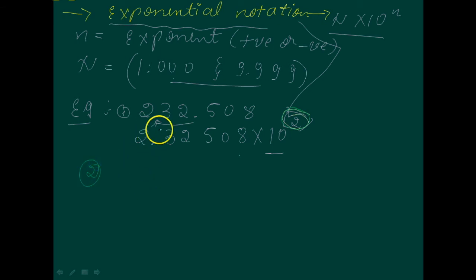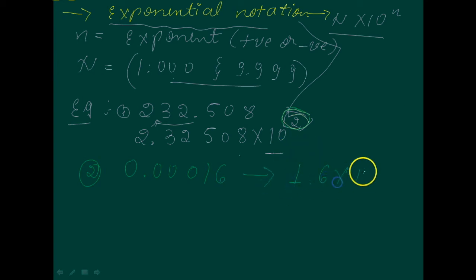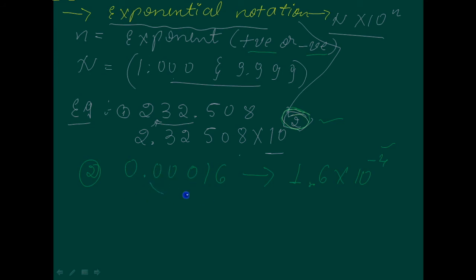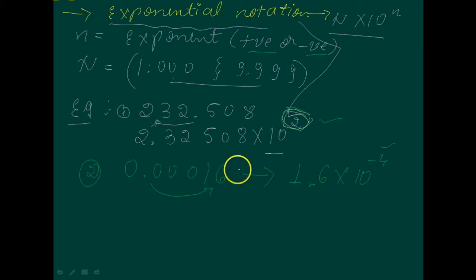The next example is 0.000016. This can be written in scientific notation as 1.6 × 10⁻⁴. The decimal has to be moved 4 places to the right — 1, 2, 3, 4 — to get 1.6, and because it is moved to the right, the exponent is negative, giving 10⁻⁴.